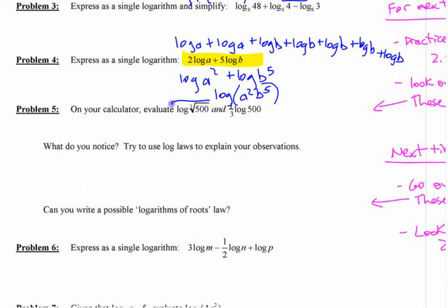This was just to have you notice something about roots like that. If you do log of the cube root of 500 and a third, one third of the log of 500, what do you notice? The number you get, the decimal number you get? What's true about them? They're the same.